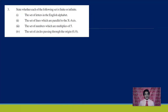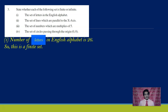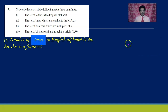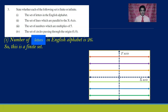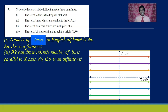Now, state which of the following sets are finite and which are infinite. First: the set of letters in the English alphabet. There are 26 letters, which we can count, so this is a finite set. Next: the set of lines which are parallel to the x-axis. If we draw a coordinate plane with x-axis and y-axis and try to draw lines parallel to the x-axis, we can draw infinitely many such lines. So this is an infinite set.